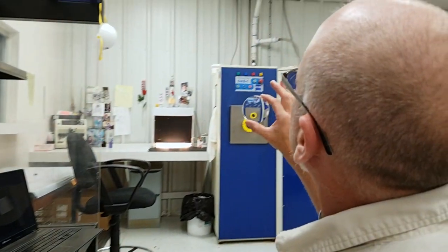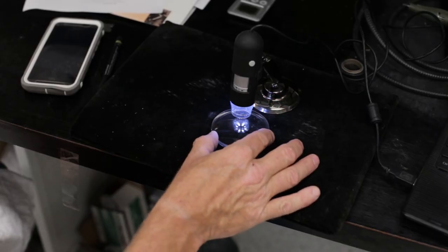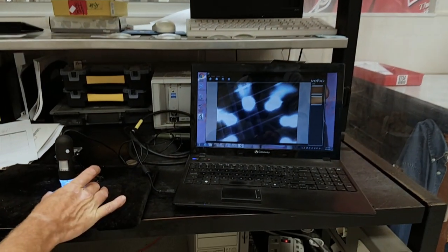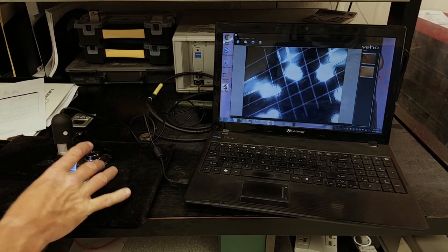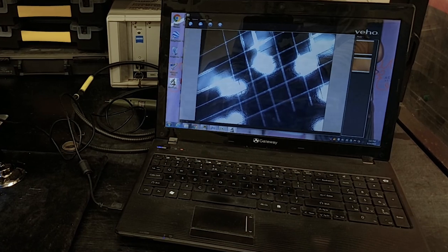Once this shock test has been completed, we remove the lens and we inspect it using this microscope. And the microscope allows us to take a really up-close look at each of the edges within the grid. What we're looking for is any kind of failure or lifting around each one of the squares.